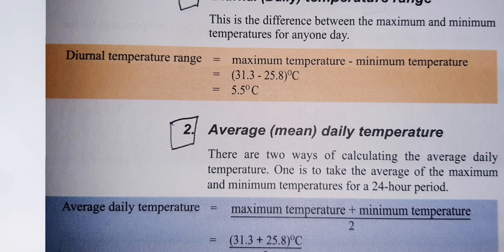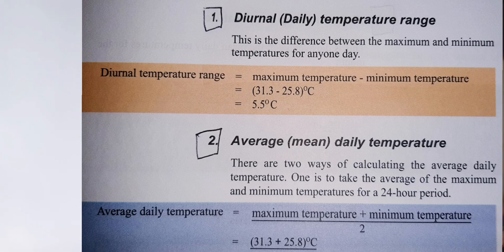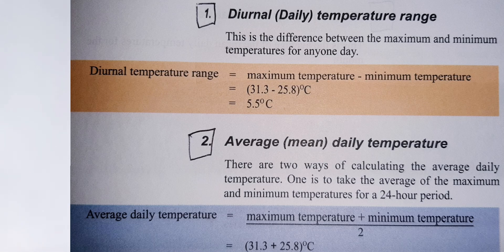Another formula is for the average daily temperature. How do you get the average daily temperature? There are two ways of calculating it. One is to take the average of the maximum and minimum temperatures for a 24-hour period. The formula is: maximum temperature plus minimum temperature, divided by 2. Then you get the result easily.